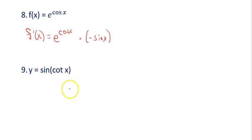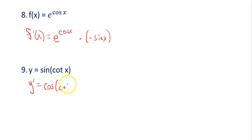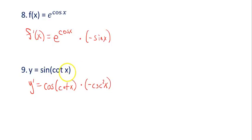The final example: y equals sine of the cotangent of x — a composition, so we use the chain rule. Do the derivative of the outside first: the derivative of sine is cosine, so change that but keep the inside the same. Then take the derivative of the inside: the derivative of cotangent is negative cosecant squared, so multiply by negative cosecant squared. Since x is plain there's nothing more to add, and that concludes the examples for this lesson.